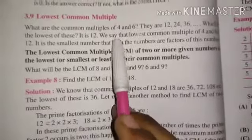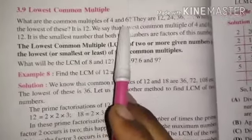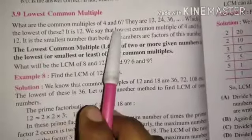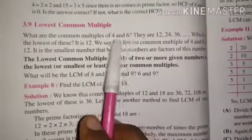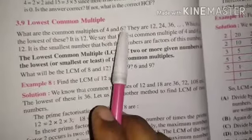What are the common multiples of 4 and 6? First you can take the common multiples of 4 and 6. What are the first common multiples of 4 and 6? The first one is 4, 3, 12 and 6, 12.